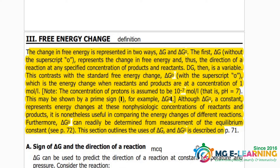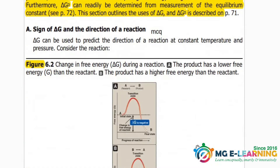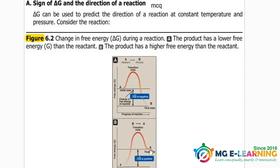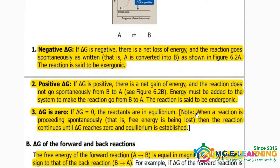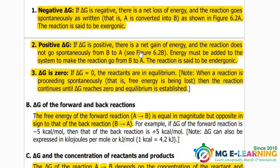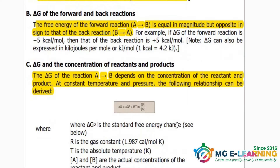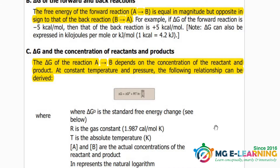You have to know the difference between delta G and delta G naught. This figure is important to see when delta G is negative and when delta G is positive, and its effect on the reaction. Delta G for forward and backward reactions, and the relation between delta G and concentrations of reactants and products — these are important from an MCQ point of view, and this equation is also important.